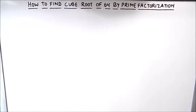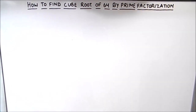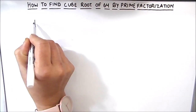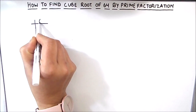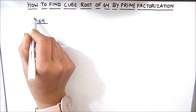Hello everyone. In this video we are going to learn how to find the cube root of 64 using the prime factorization method. In this method, we divide the number by prime numbers and find the factors of this number. After finding the factors, we write the number as the product of its prime factors and find the cube root.